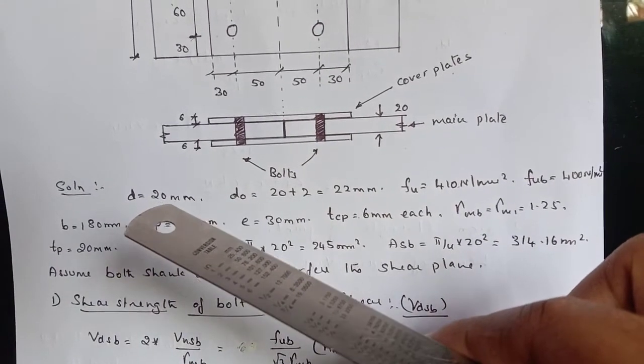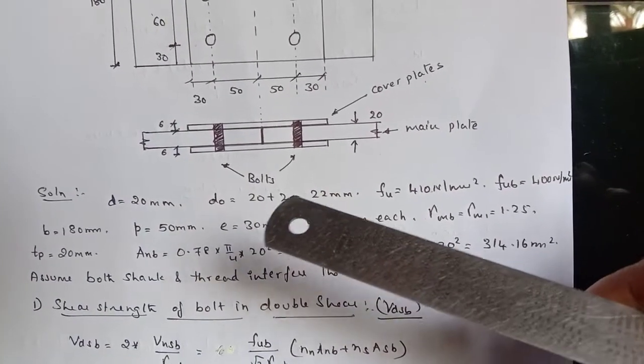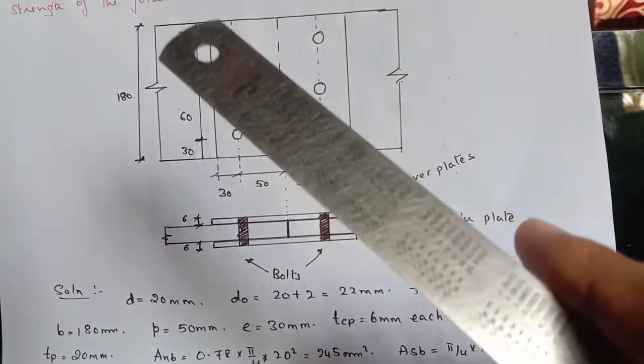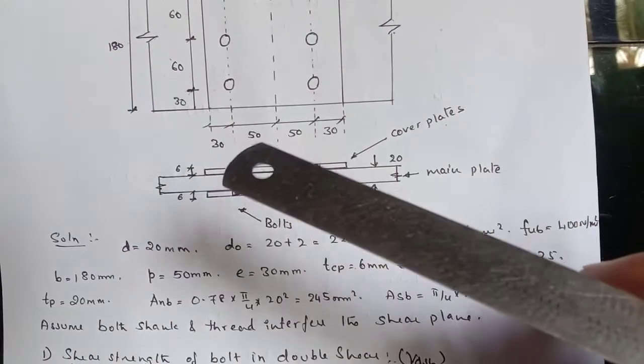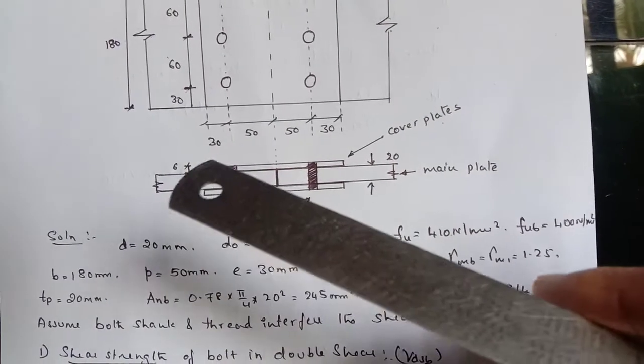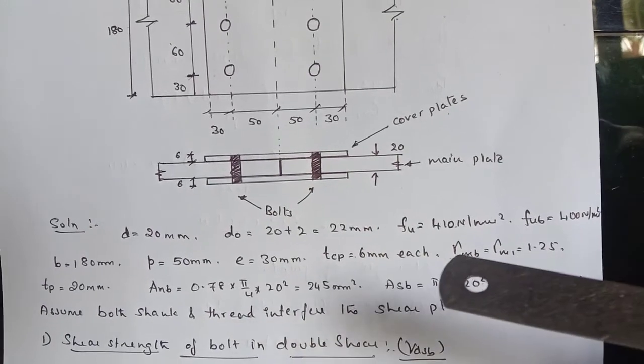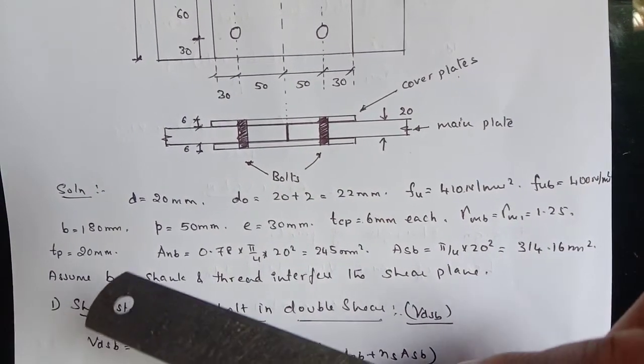So given data, diameter of the bolt 20 mm, diameter of the hole 22 mm, diameter of bolt plus standard clearance, FU and FUB. Then B equal to 60 plus 60 plus 30 plus 30 works out to be 180 mm. Then pitch equal to 50 mm from this edge distance equal to 30 mm. Then thickness of cover plate 6 mm each, gamma MB and gamma M1 1.25. Thickness of the plate is 20 mm here, the main plate.